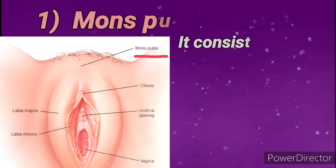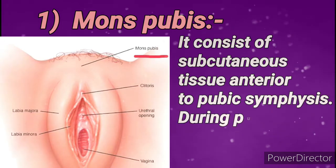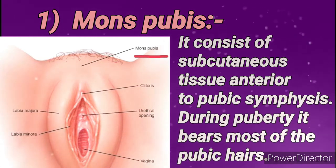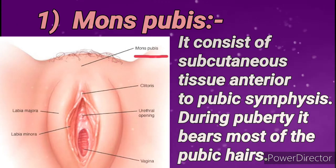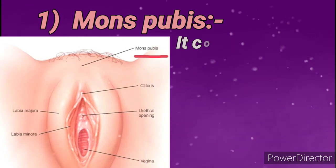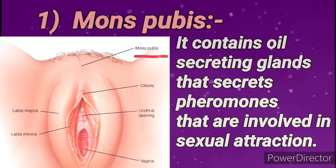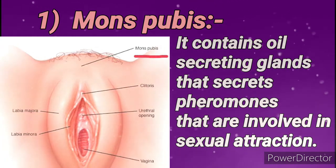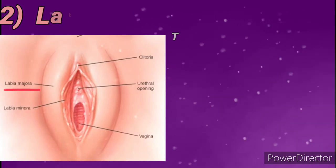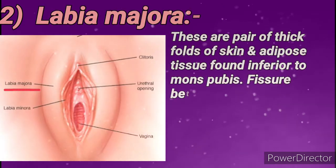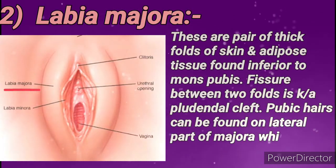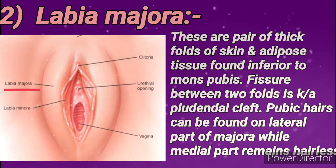Now we will see each organ separately. First is mons pubis — it consists of subcutaneous tissue and is anterior to the pubic symphysis. During puberty it bears most of the pubic hairs. The oil-secreting glands of mons pubis secrete hormones which are responsible for producing sexual attraction.